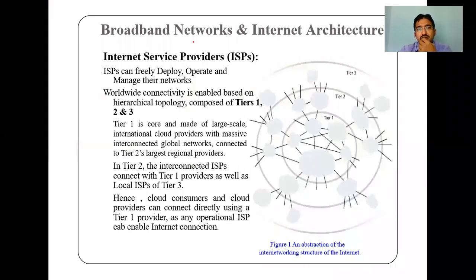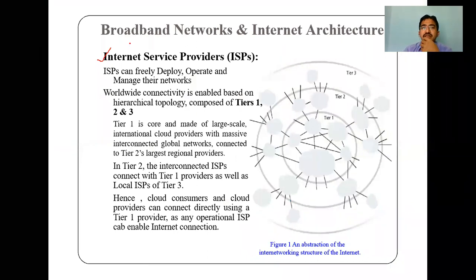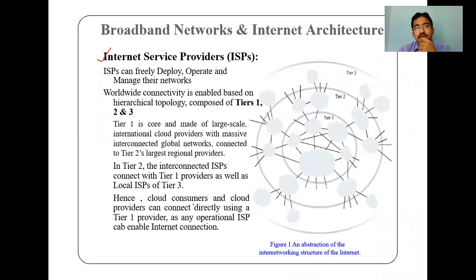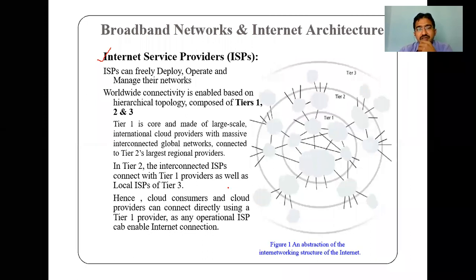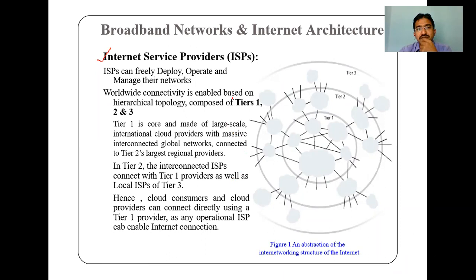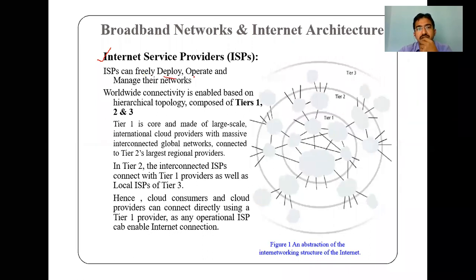Coming to the actual topic, broadband networks and internet architecture. The first thing we are going to discuss is ISP — internet service providers. An ISP is a service provider. Already in Unit 2, we discussed clearly what a cloud provider means, who is called a cloud consumer, what IT resources we have, and some different terminologies. An internet service provider can freely deploy, operate, and manage networks — those are the three functionalities of the ISP.